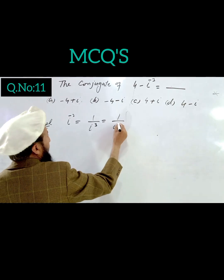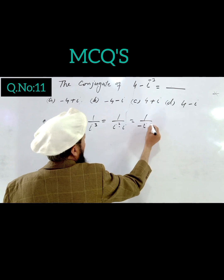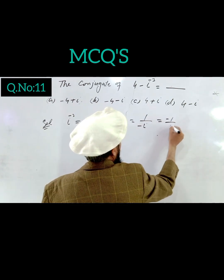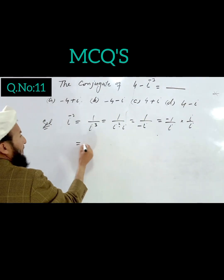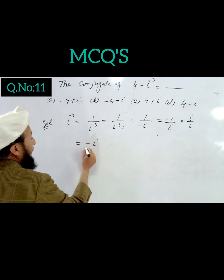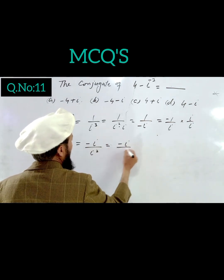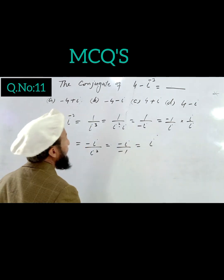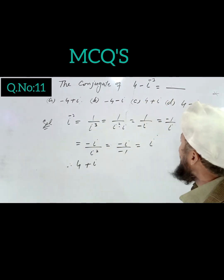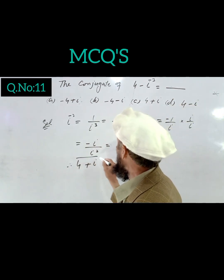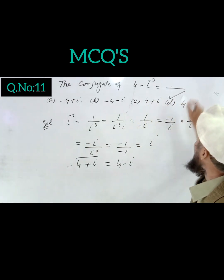We write iota cubed as iota squared times iota. Since iota squared equals minus 1, we get minus 1 times iota. Then we get minus iota divided by iota squared equals plus iota. So the result is 4 minus iota and the correct answer is C, 4 plus iota.